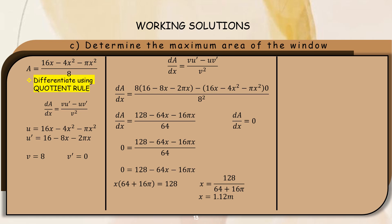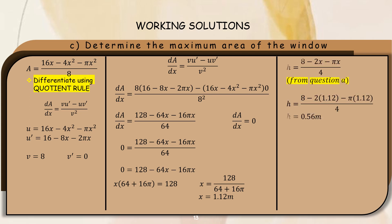To find the maximum value of x, we set dA/dx = 0. We get the maximum value of x, which is x = 1.12 meters. To find the maximum value of h, from question (a) we use h = (8 minus 2x minus pi x) divided by 4. Substituting the value of x, we get the maximum value of h, which is h = 0.56 meters.